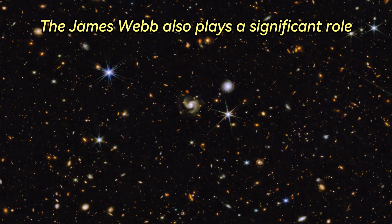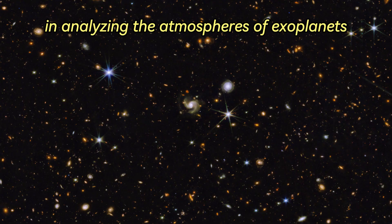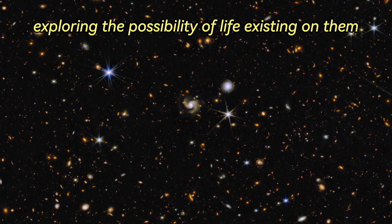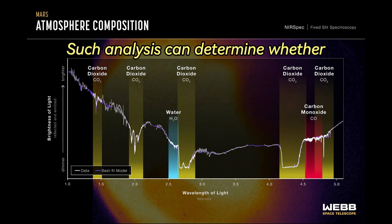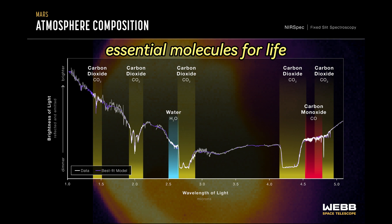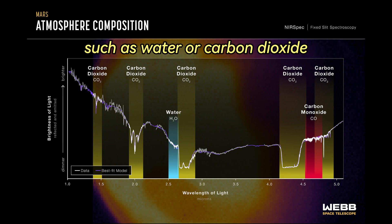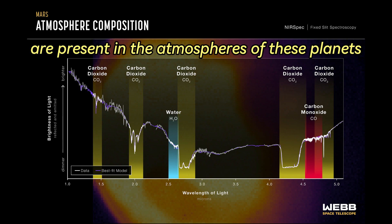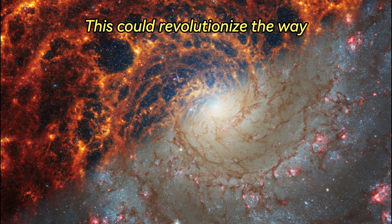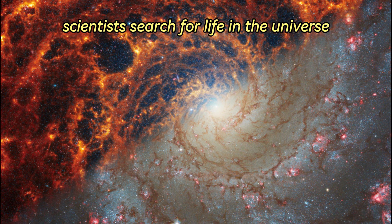The James Webb also plays a significant role in analyzing the atmospheres of exoplanets, exploring the possibility of life existing on them. Such analysis can determine whether essential molecules for life, such as water or carbon dioxide, are present in the atmospheres of these planets. This could revolutionize the way scientists search for life in the universe.